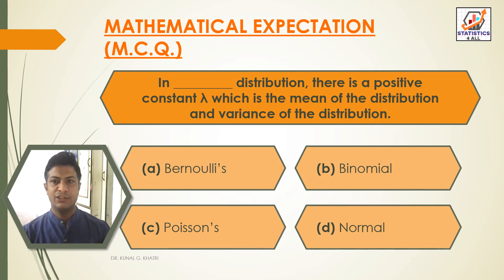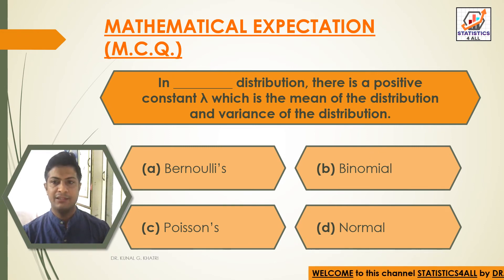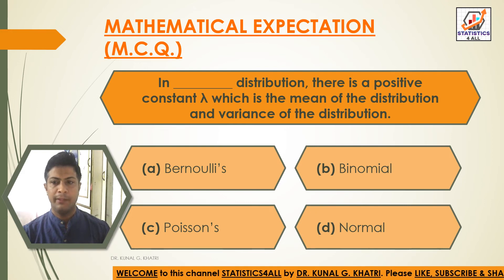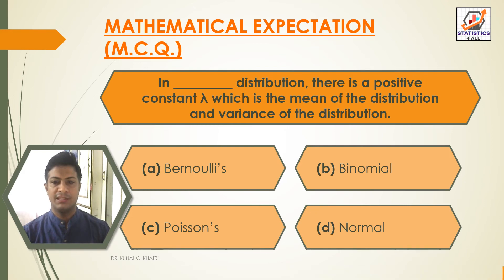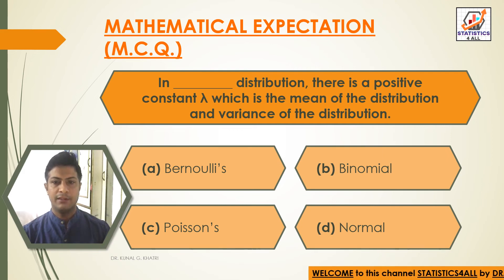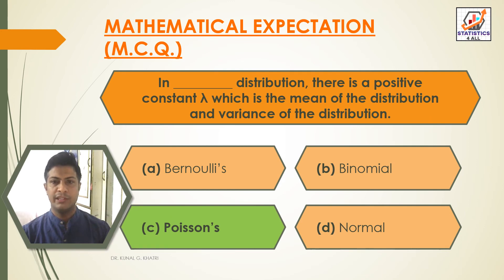In dash distribution there is a positive constant lambda which is both the mean of the distribution and the variance of the distribution. Option A — Bernoulli's; Option B — Binomial; Option C — Poisson; Option D — Normal. The answer is Option C: Poisson. In Poisson distribution, there is a positive constant lambda which is both the mean and the variance of the distribution.